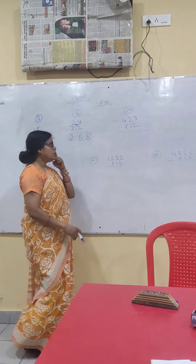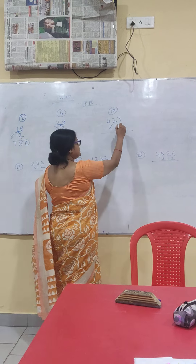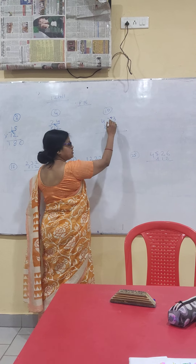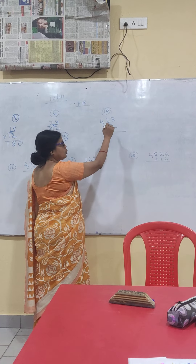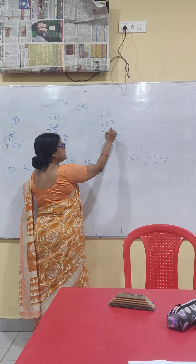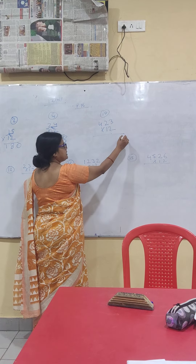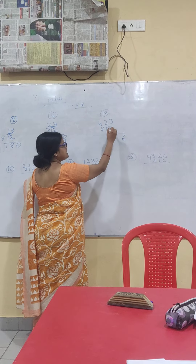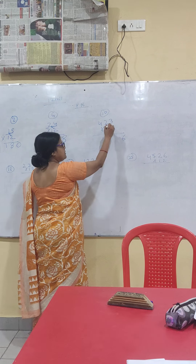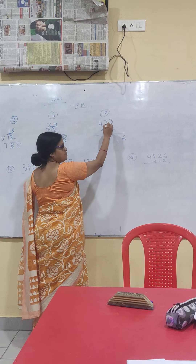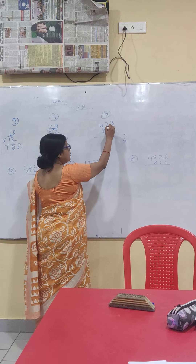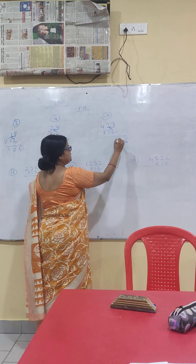One more. 2 threes are — now 3 numbers are, then the concept here. 2 threes are 6. Now the next number: 2 twos are 4. 4 plus 3 is 7.